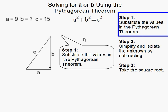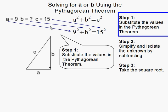So, let's substitute in our values. We know that A is equal to 9, so I'm going to substitute in 9 for A. We don't know what B is, so we'll just leave it as B. And C is 15, so I'm going to substitute in 15 for C.